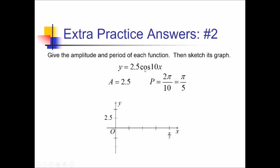Since I'm dealing with cosine, that begins at the top of the wave. So on the far left, at the beginning of my wave, I'm going to start at the top here at 2.5. Then I'm going to go down a step as I take one step over, then down again until I hit the bottom. Then I just bounce back up — one step over, one step up, step over, step up — and then draw the cosine curve smoothly through those points.